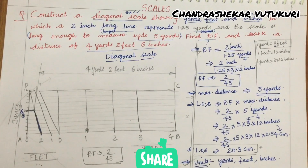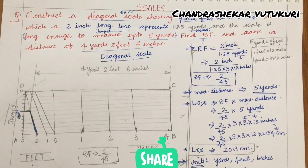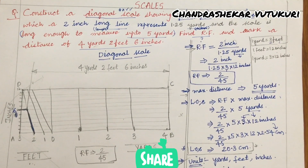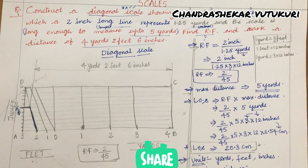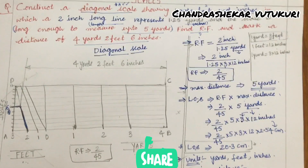This is how you construct a diagonal scale in yards, feet, and inches. Remember the sequence: first work out the RF, then the maximum distance, then the length of the scale, then the units, and finally mark the required distance. Please share and subscribe, and comment if you need any other videos.